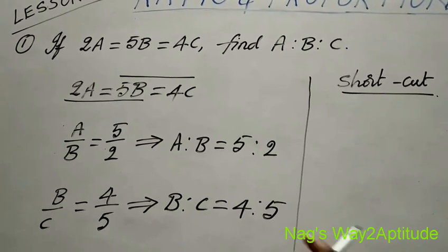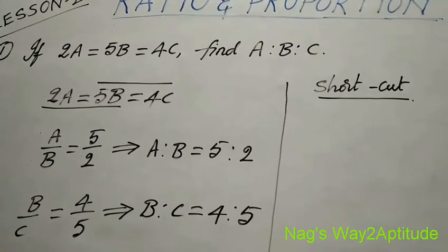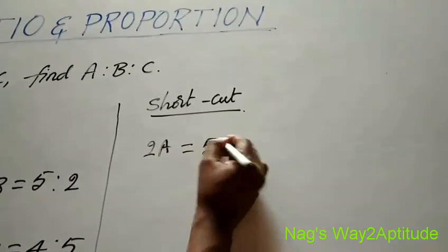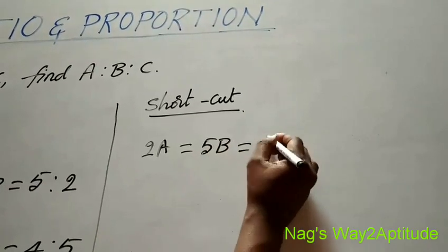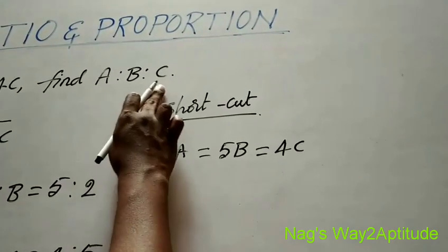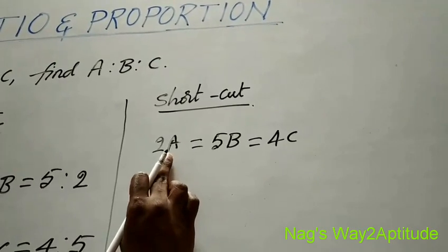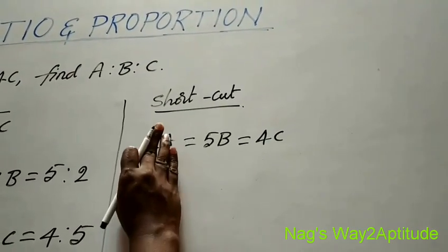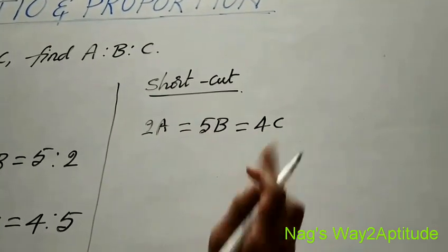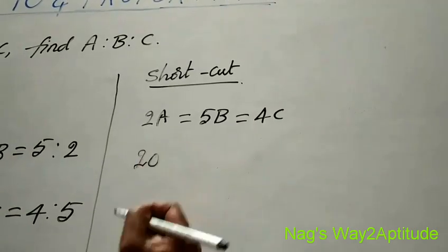We can solve this problem like this, but it is easier to follow the shortcut method. So, 2a is equal to 5b is equal to 4c is given, and we need to find a is to b is to c. For the a term, you leave 2a and multiply the other two coefficients: 5 and 4. 5×4 are 20.